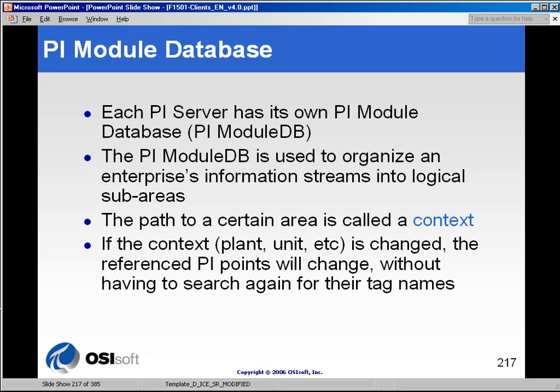With the PI Module Database, you can build a hierarchy of your facility, property, or plant that includes that device. You can then set up aliases against that device, and once you do that, all of your users can simply drill down with the click of a mouse to find out what you're monitoring on that device, and select which tags they would like in their displays or spreadsheets.